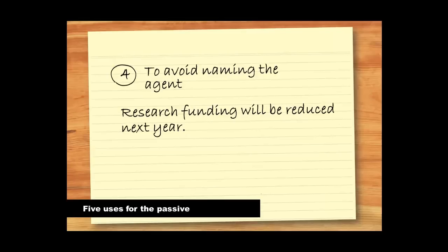We can also use the passive voice to avoid naming the agent. In this way, we can avoid blaming someone or making an inflammatory statement by using the passive.